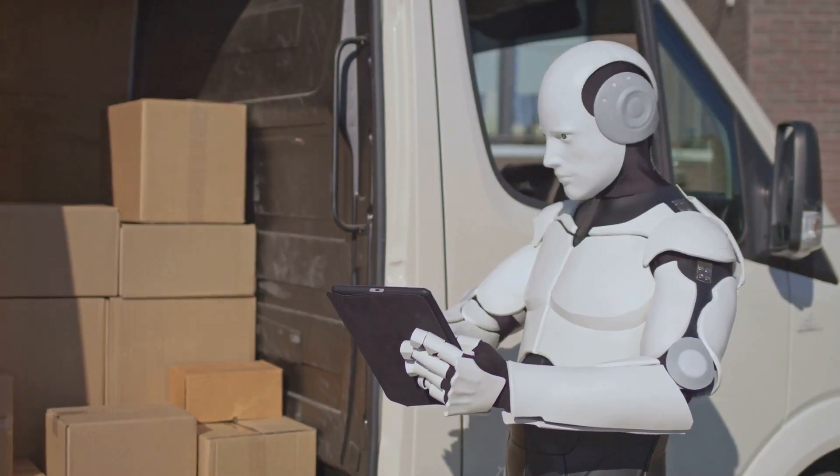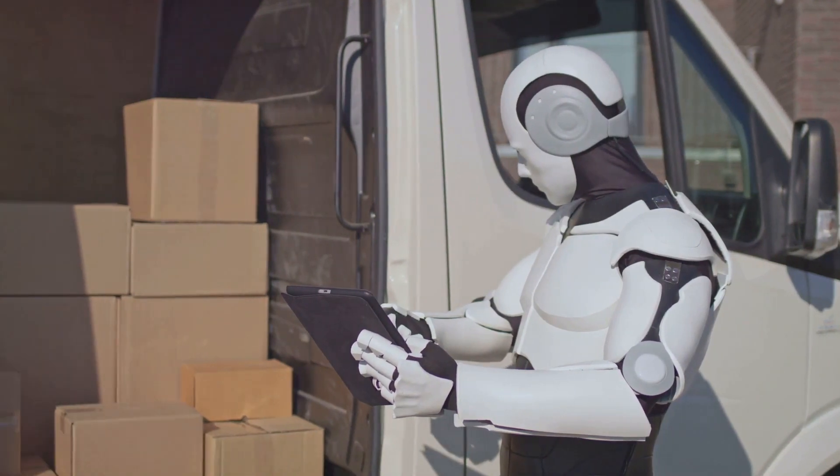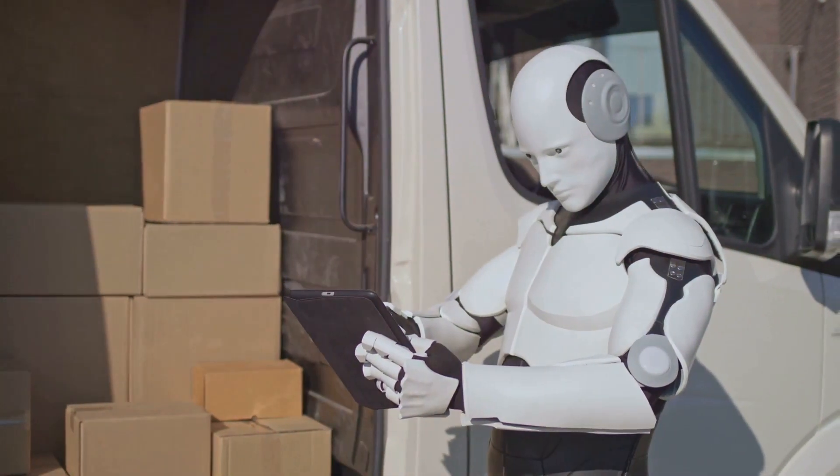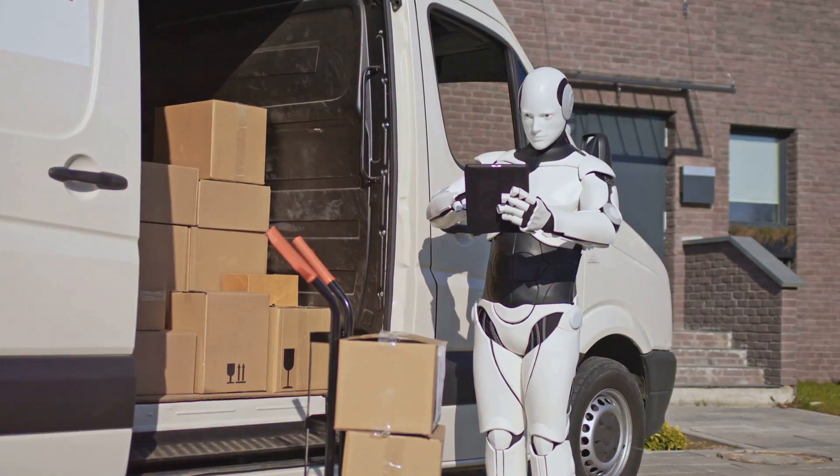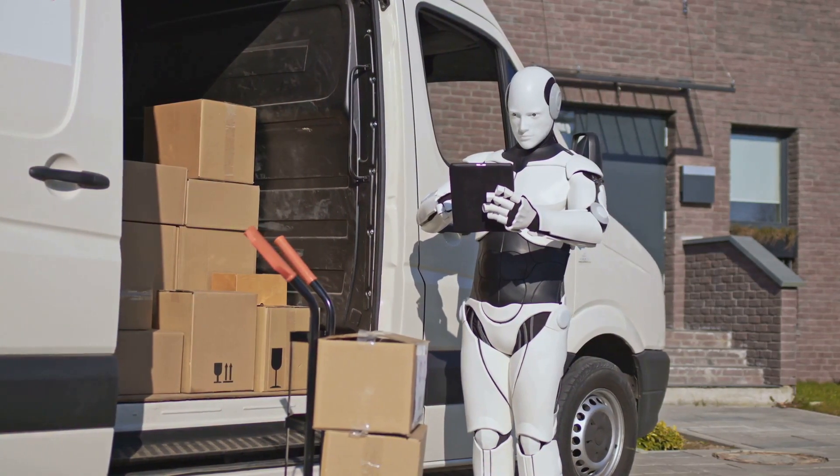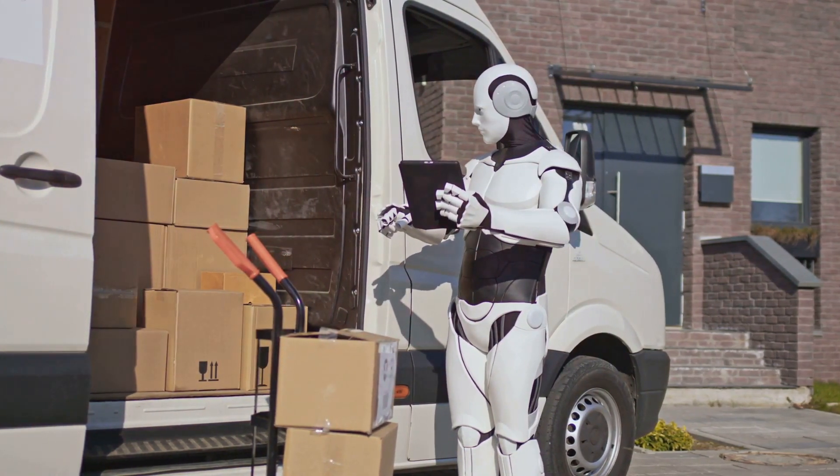But it's not just about cleanliness. Robots have also made their mark in the realm of shopping. Have you ever ordered groceries online and had them delivered by a self-driving vehicle or a drone? That's robotics in action. These autonomous delivery systems use sophisticated algorithms to plot the most efficient routes, ensuring your groceries arrive fresh and on time.